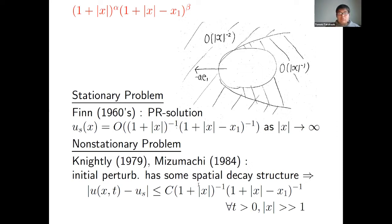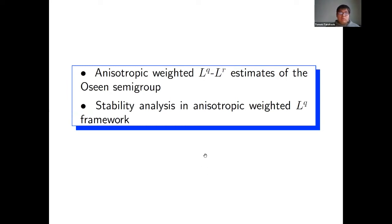It is well known that physically reasonable solution does not belong to L2D. So, it seems reasonable to look for a non-stationary solution in a class that is not in L2D. And LQ stability was proved by Professor Shibata. And the key estimates were LQ-LR estimates of the Oseen semigroup. We first consider anisotropic weighted LQ-LR estimates of the Oseen semigroup. There is less literature concerning the Oseen semigroup in weighted Lebesgue space. This issue is important itself. And as an application, we study stability in anisotropic weighted LQ framework.